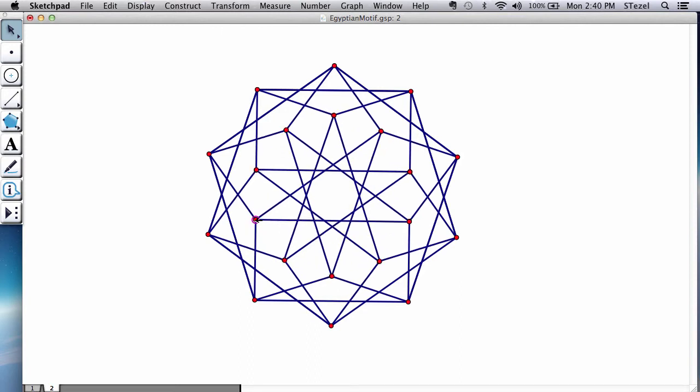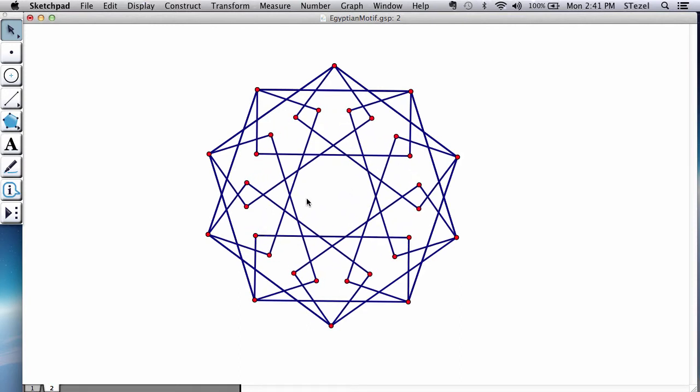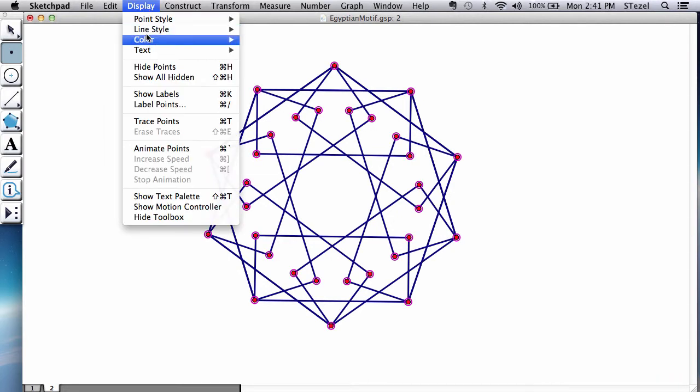So at this point, you have some artistic choices, how you want to proceed. I personally don't like seeing all these points. So what I do is I go to the point tool, edit, select all the points, display, hide the points.